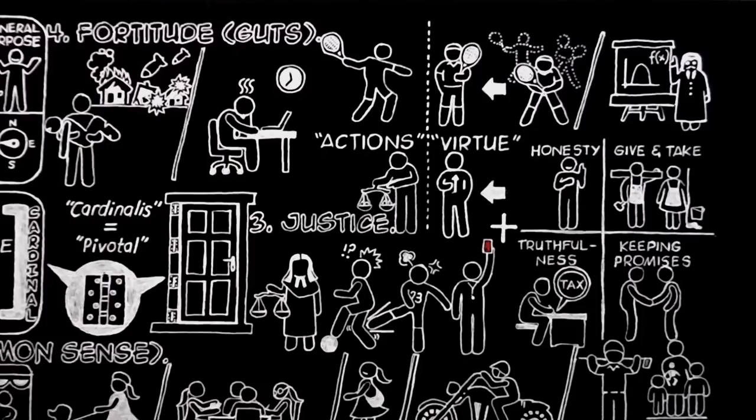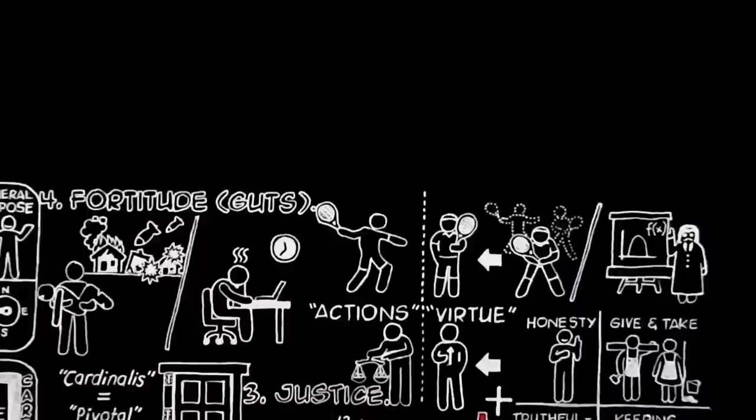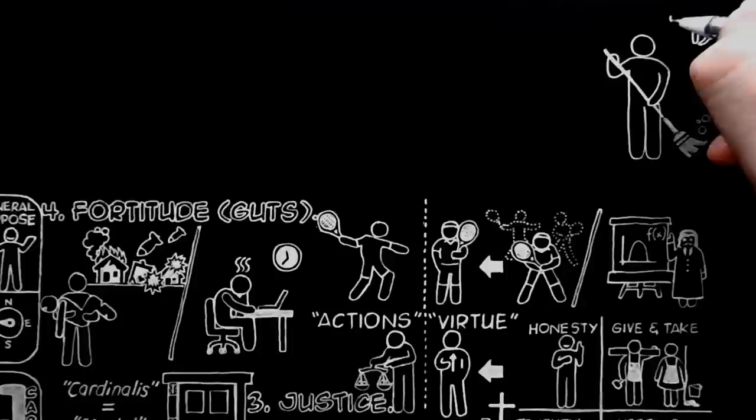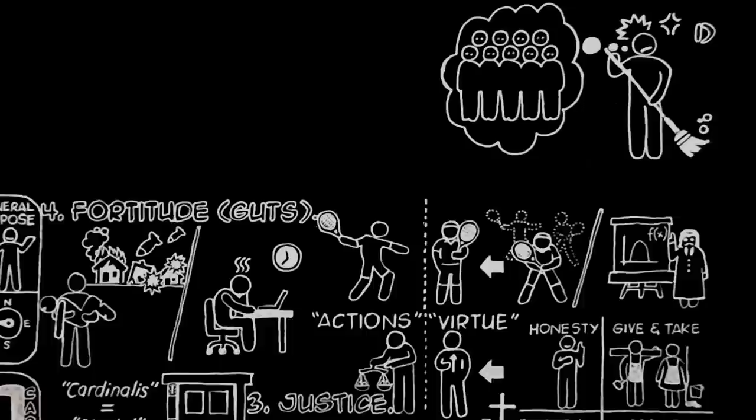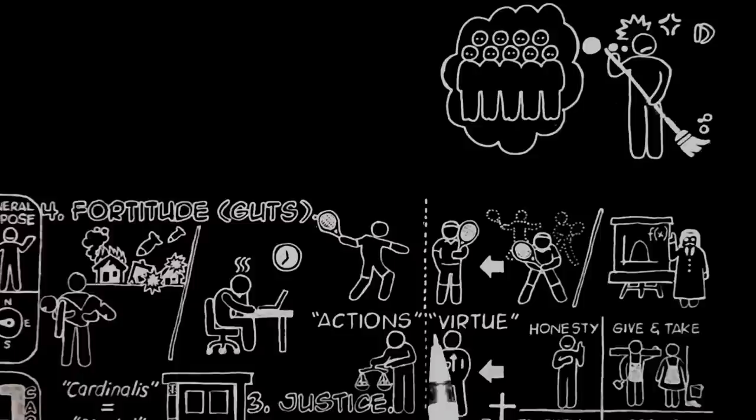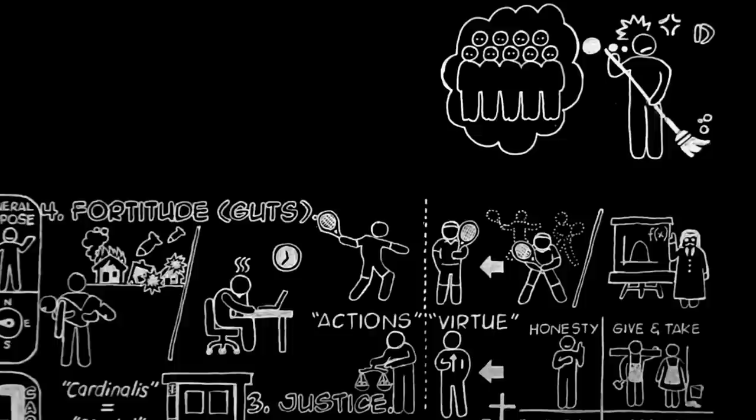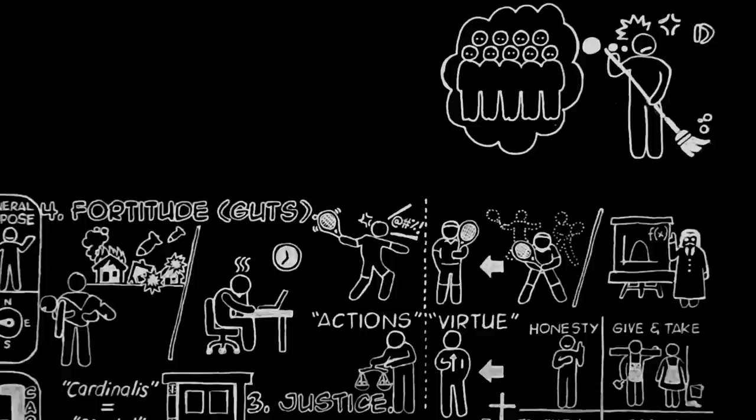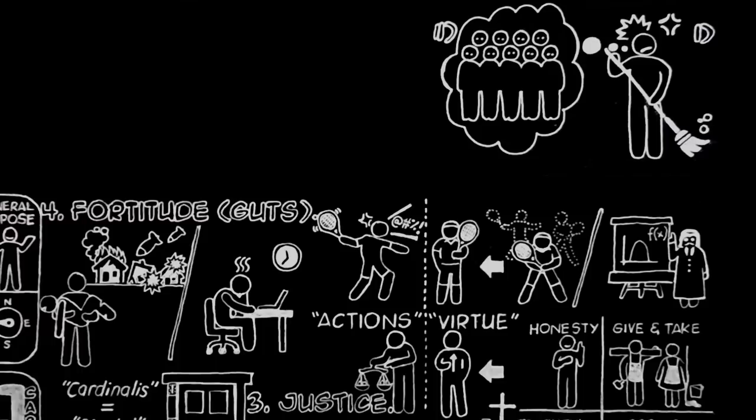This distinction is important for the following reason. If we thought only of the particular actions, we might encourage three wrong ideas. One, we might think that, provided you did the right thing, it did not matter how or why you did it, whether you did it willingly or unwillingly, sulkily or cheerfully, through fear of public opinion or for its own sake. But the truth is that right actions done for the wrong reason do not help to build the internal quality or character called a virtue, and it is this quality or character that really matters. If the bad tennis player hits very hard, not because he sees that a very hard stroke is required, but because he has lost his temper, his stroke might possibly, by luck, help him to win that particular game, but it will not be helping him to become a reliable player.